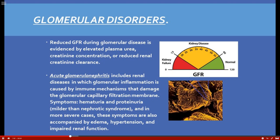In acute glomerulonephritis there is proteinuria — not as bad as nephrotic syndrome, but still a loss of protein. The glomeruli have very tight junctions designed to keep protein from being filtered out. Because they're damaged, protein begins to leak through into the urine. A simple urinalysis can tell us a lot about how those kidneys are functioning.